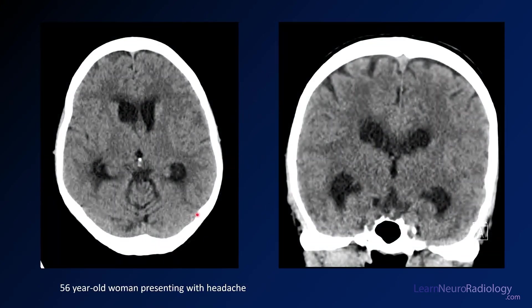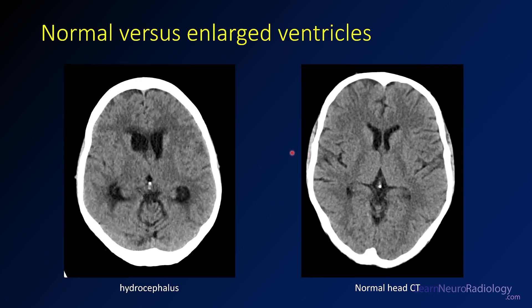Here's a CT from a 56-year-old woman presenting with headache. The ventricles are definitely too big for age — they have a convex contour where it's usually concave. Both frontal horns are enlarged. The temporal horns, which you usually don't see that well, are quite enlarged here. Comparing this patient with a normal patient: normally the frontal horns may be shaped like a boomerang or banana with a concave margin, but here they're expanded out. The temporal horns are quite expanded as well — that can help you identify hydrocephalus.